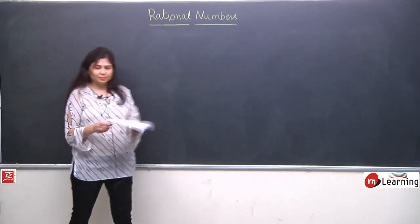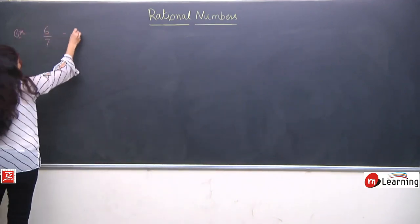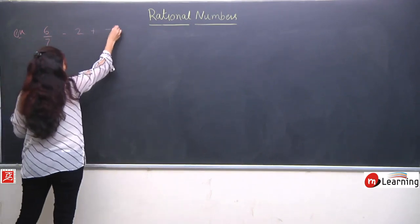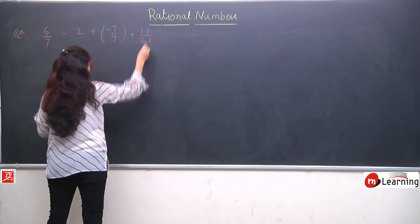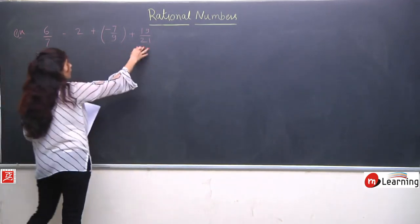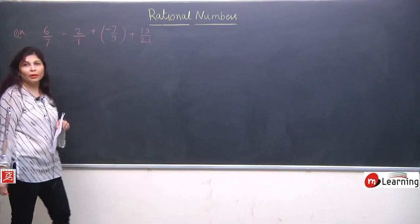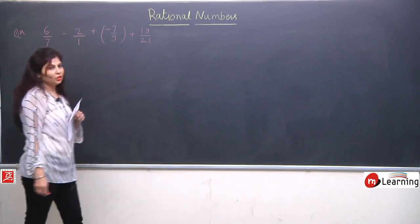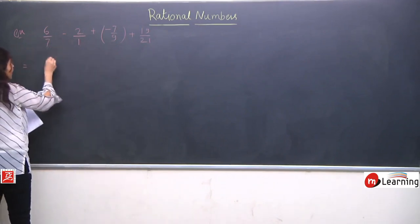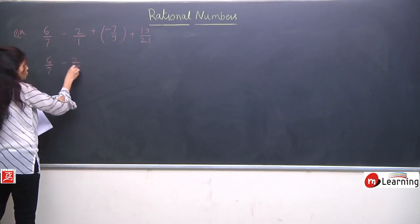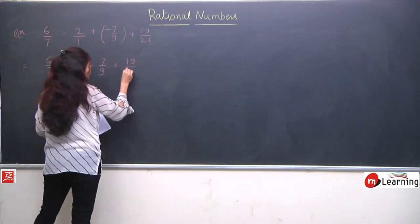Another example: 6/7 - 2 + (-7/9) + 19/21. Here, 6/7, -7/9, and 19/21 are fractions, but 2 is not a fraction. So first, to make the question symmetric, we put 1 in the denominator of 2, making it 2/1. Now they are all fractions. We can take LCM — but first, let us open the sign brackets: minus 2/1, plus minus is minus, and 19/21.